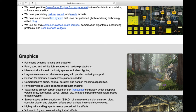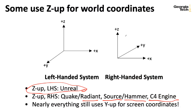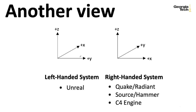Even though these tools typically use Z for the vertical axis in 3D coordinates, when they do the final projection onto the 2D screen they use Y for the vertical coordinates. So if you take the left-handed system and rotate it 90 degrees, you could redraw it as you would see in the Unreal editor — where Y goes right instead of X, and X goes away from you.